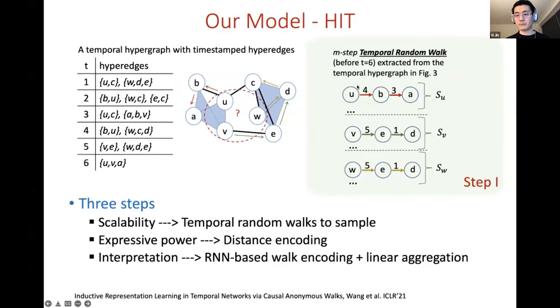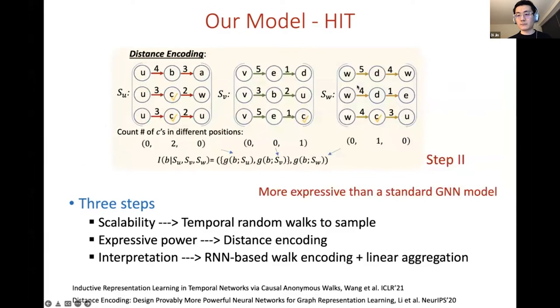This method is inspired by our previous work on lower order temporal network representation learning. Second, sampling walks may break the contextual structure and causes loss of structural information. To compensate the loss of information we compute the landing counts for each node based on the sample walks and group this count together for each node as a structural feature termed distance encoding. And distance encoding can actually provide the structural information for each node. We may use such distance encoding to make our model more expressive than just using a standard graph neural network model.